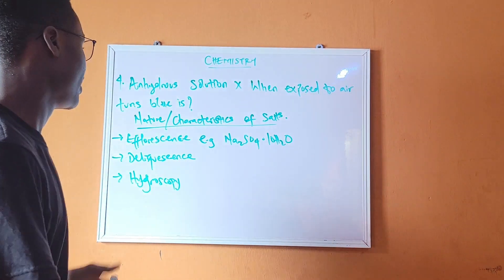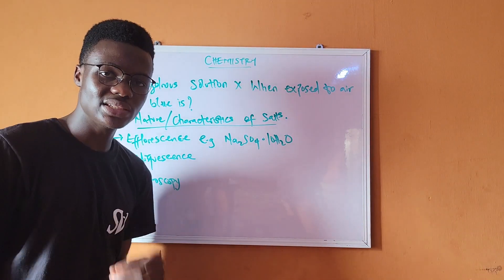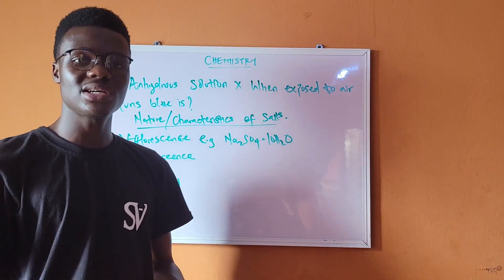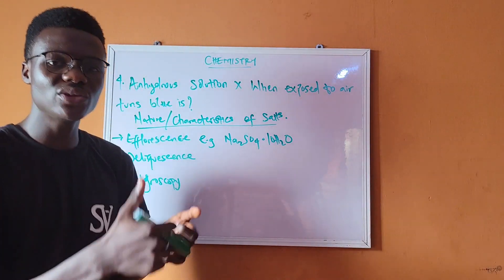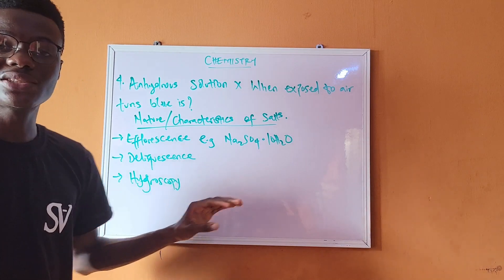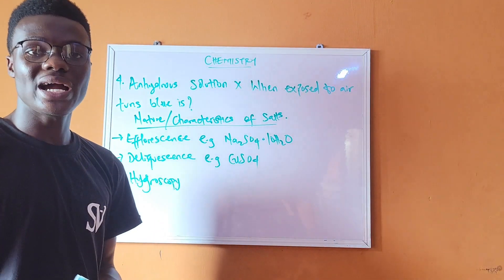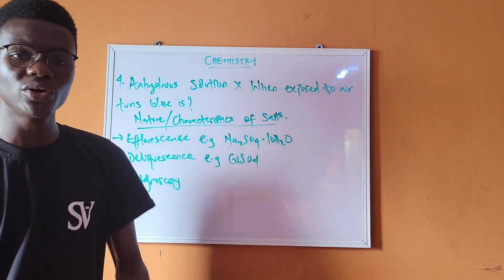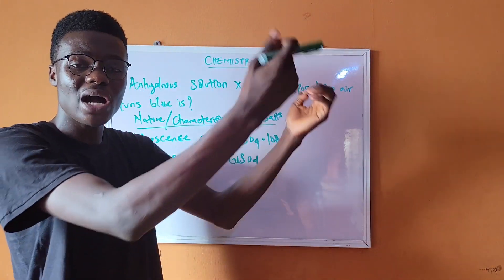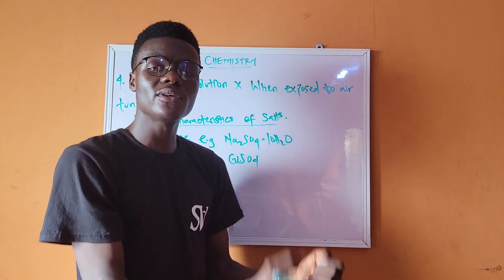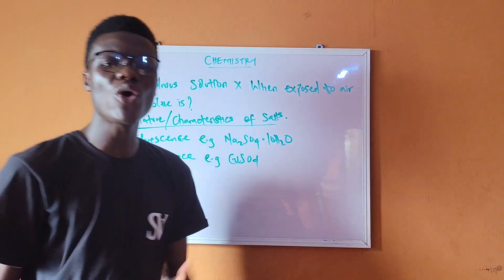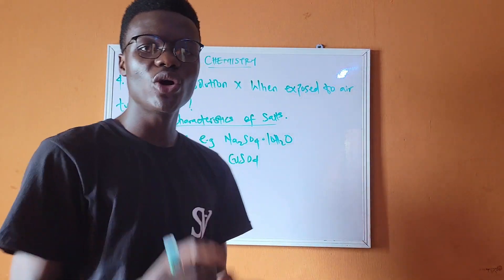Deliquescence is when anhydrous salts exposed to the atmosphere absorb water and turn into a solution. Hygroscopy is when anhydrous salts absorb water from the atmosphere but do not turn into a solution — they just become wet or sticky. A good example is quicklime (CaO), which is an anhydrous hygroscopic salt.